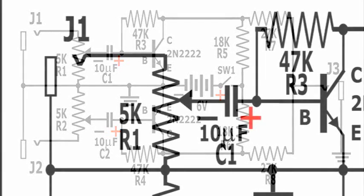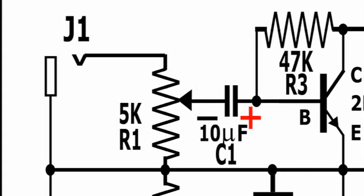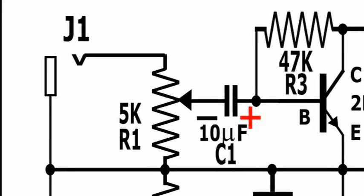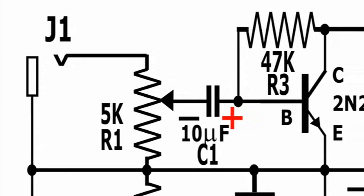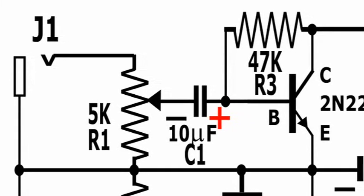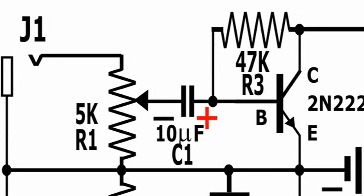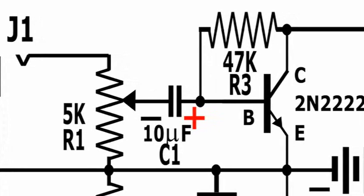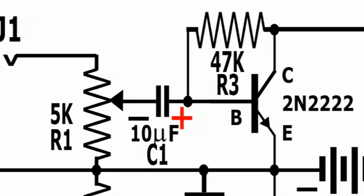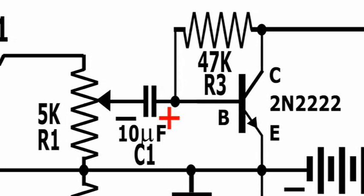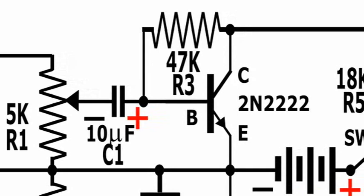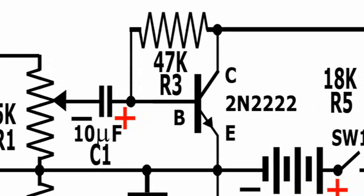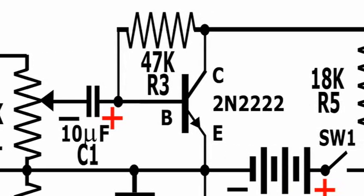Analyzing one of the channels, we will first take a look at the channel shown in the upper half of the drawing. The signal from the first microphone enters the mixer through jack J1, then continues to potentiometer R1, which controls the volume of that channel. Capacitor C1 allows the passage of the microphone signal but prevents the escape of the bias current from the base of the transistor.